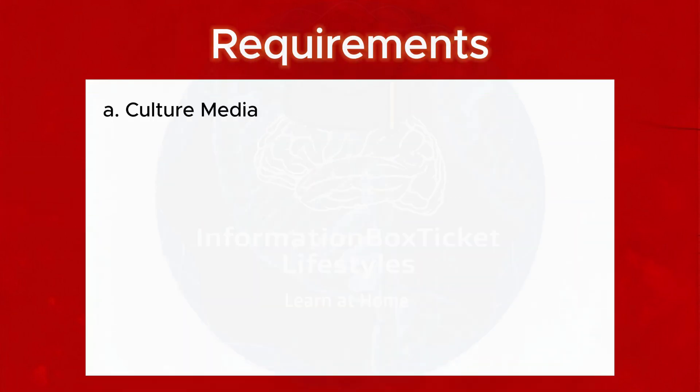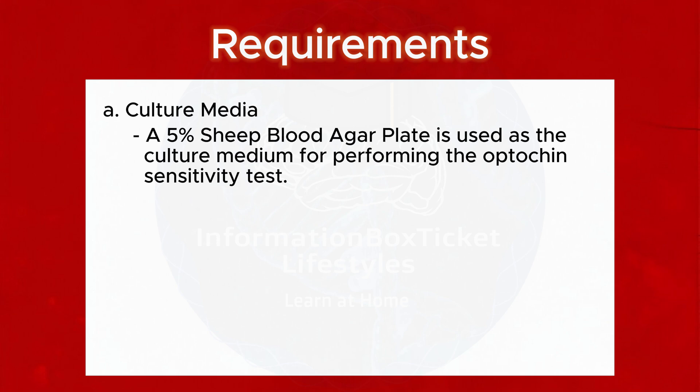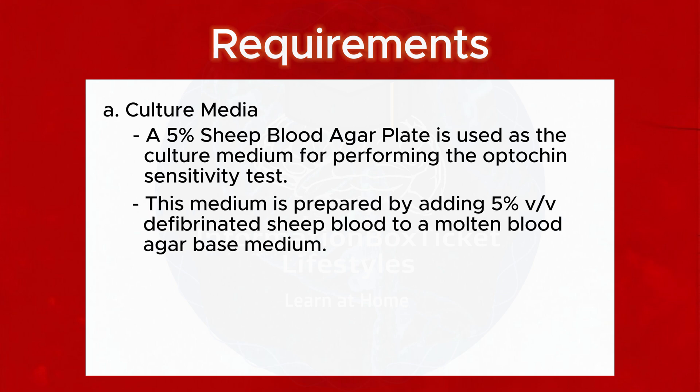Requirements. Culture Media: A 5% sheep blood agar plate is used as the culture medium for performing the Optochin sensitivity test. This medium is prepared by adding 5% v/v defibrinated sheep blood to a molten blood agar base medium.